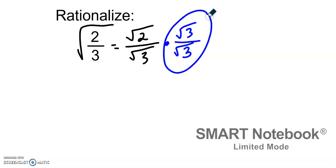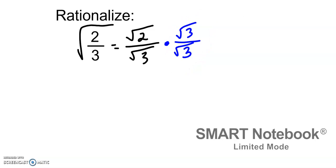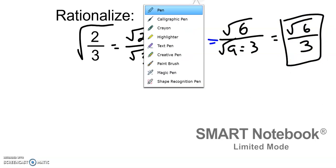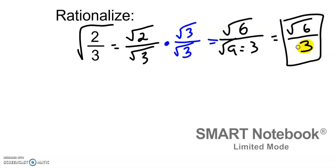Remember, square root of 3 over square root of 3 equals 1, so we're not changing the value of the fraction — just the way it appears. We do square root of 2 times square root of 3, which gives square root of 6. In the denominator, square root of 3 times square root of 3 is square root of 9, which equals 3. So we end up with square root of 6 over 3. Notice we end up with 3, which is what was underneath the radical.